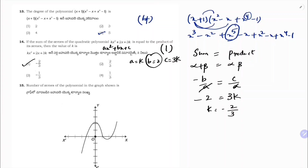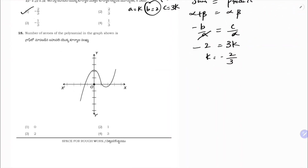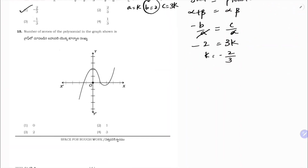Number of zeros of the polynomial: wherever the graph cuts the x-axis, that many zeros. Here it cuts at 1, 2, 3 points. So this polynomial has 3 zeros. Correct option is 4.